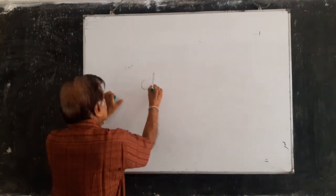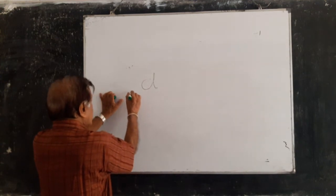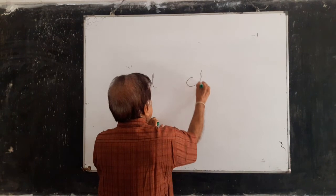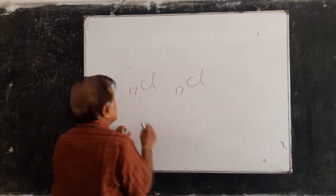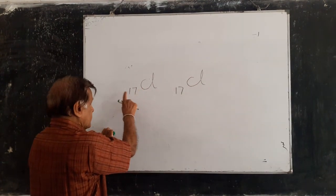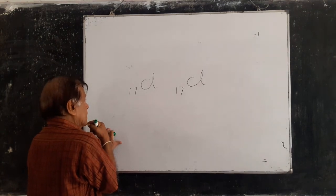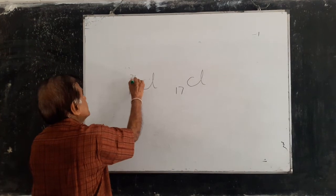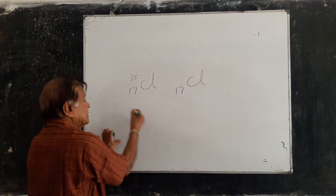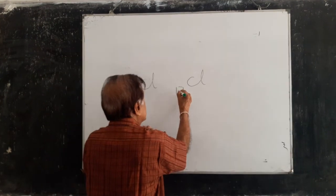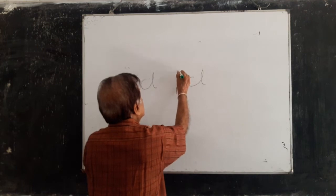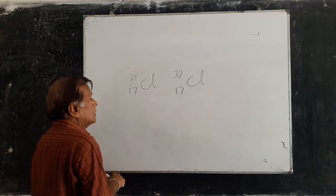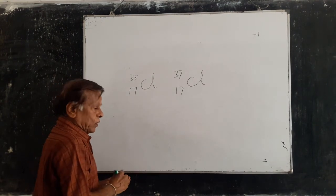Let's take another example — chlorine. The atomic number of chlorine is 17. In one isotope there are 18 neutrons, giving a mass number of 35 — this is Cl-35. In the other isotope there are 20 neutrons, giving a mass number of 37 — this is Cl-37. These are the two isotopes of chlorine.